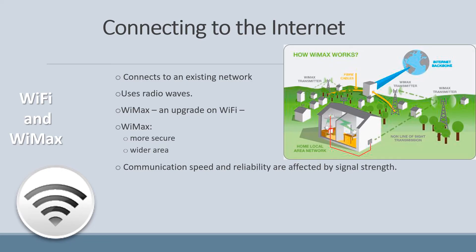Wi-Fi and WiMAX are another way to connect to the internet. For this you need an existing network that has already connected to the internet, and then you connect to that over Wi-Fi or WiMAX. Both use radio waves. WiMAX is essentially an upgrade of Wi-Fi — it is more secure and works over a much wider area. Communication speed and reliability are both affected by signal strength.